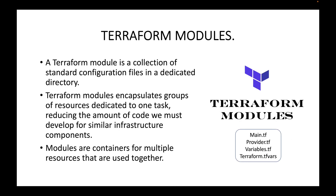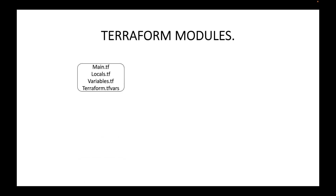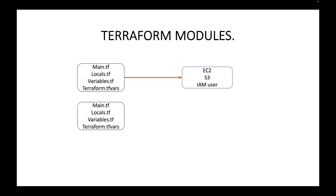Modules are containers for multiple resources that are used together. Until now, whenever we wanted to set up infrastructure, we created multiple .tf files and used them to create resources. For example, if you want to launch an EC2 instance, create an S3 bucket, and create an IAM user, you write the respective configuration files with the resource blocks. After a few days, if you get the same requirement for a different project, you end up writing a different set of .tf files creating the same resources.